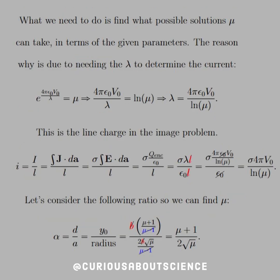So what we need to do is to find the possible solutions of mu that it can take in terms of the given parameters. The reason why is due to needing a lambda to determine the current. So remember that exponential that we set equal to mu? Let's solve it again and solve that for lambda. So we have the exponential equal to mu, then we take LN of both sides, and then we solve this for lambda, so we multiply lambda over, divide by LN mu, and here we go. So this is the line charge of the image problem.